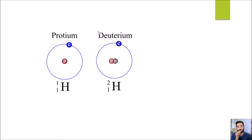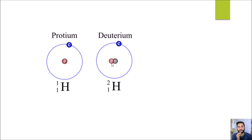The second isotope is called deuterium. We have the addition of one neutron in deuterium. There is no neutron in protium, but there is one neutron in deuterium. So when you add protons and neutrons together, you get mass 2. The atomic mass of deuterium is 2, and the atomic number remains the same, which is 1, because there is only one proton — there is no addition of protons, but there is addition of neutrons.